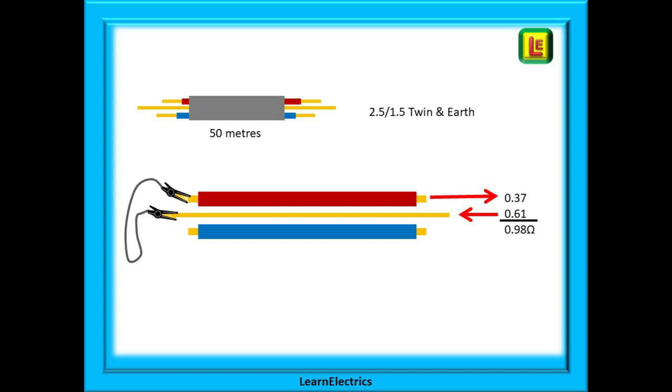Often we will want to know the R1 plus R2 resistance of a cable, and we can do this by linking the phase and CPC together at one end of the circuit.